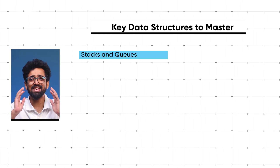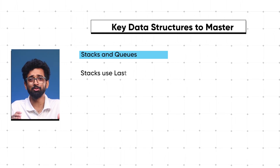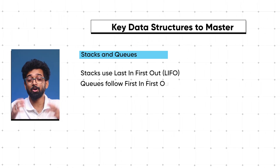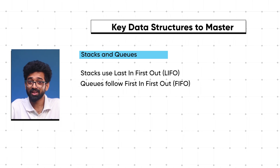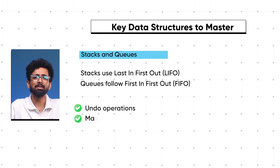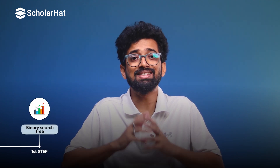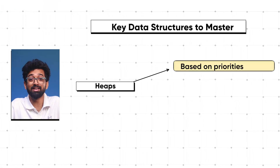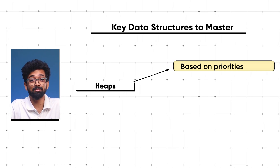Stacks and queues handle data in a specific order. Stacks use Last In First Out (LIFO) while queues follow First In First Out (FIFO). They are useful for implementing features like undo operations and managing tasks. Trees are perfect for hierarchical data — start with binary search trees and then explore more advanced types like AVL trees to organize and retrieve data efficiently.